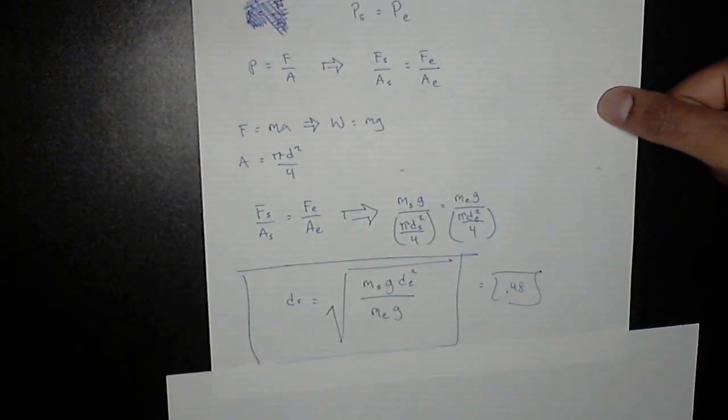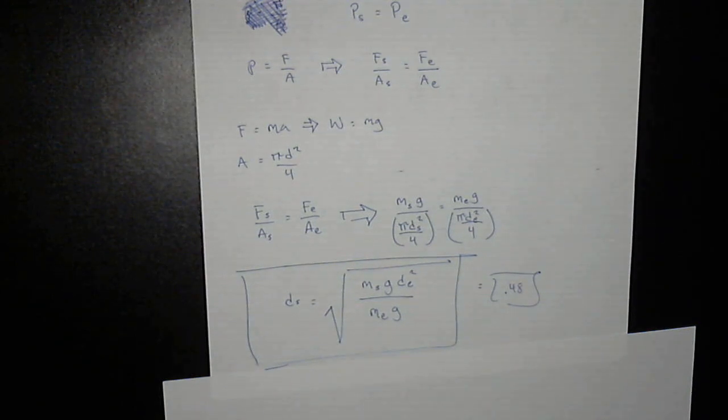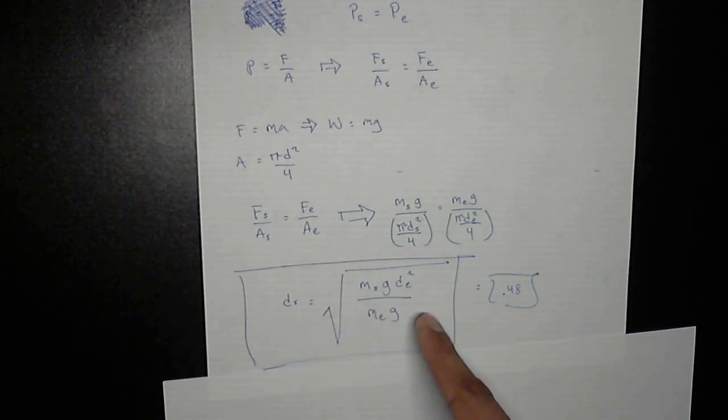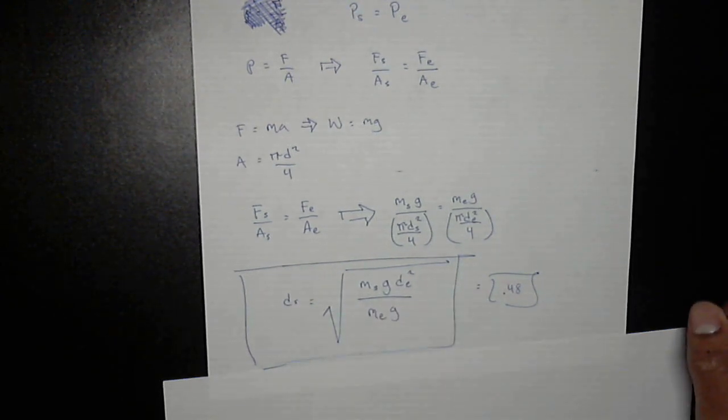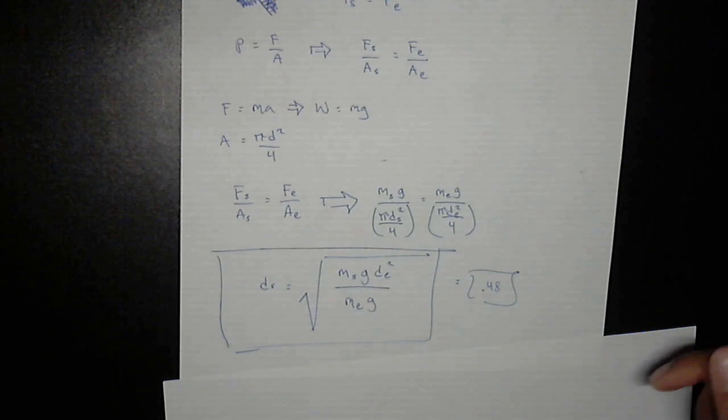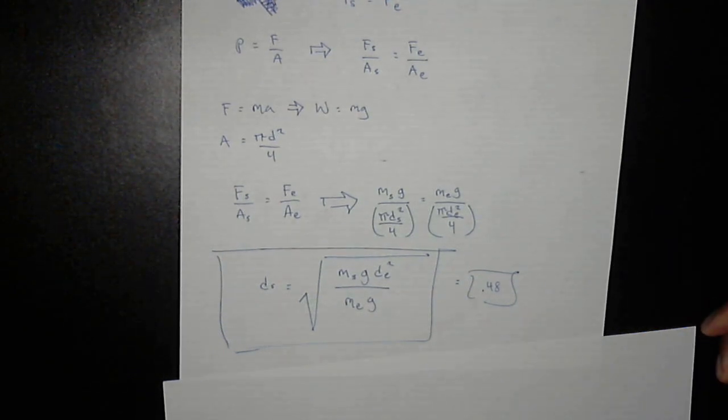I'm going to skip a bunch of algebra, but I promise when you solve for ds, this is what you get. And we know this is an answer because it's what we want written only in terms of things that we already know. So these are all known values right here. And if you plug everything in, you should get .48 is the answer.